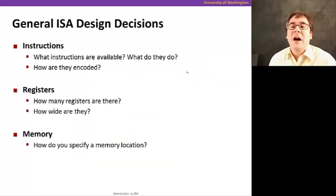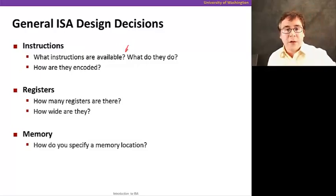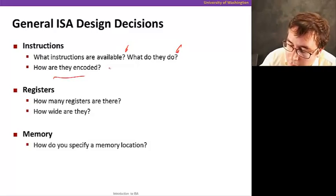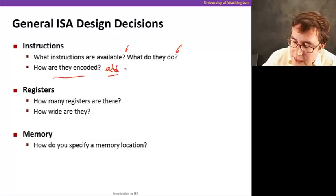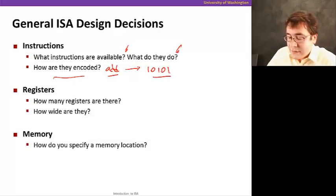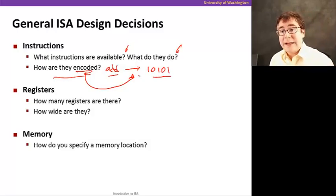So, here are the major decisions when designing an ISA. First of all, obviously, what instructions are available, like add, subtract, multiplication, floating point operations, and so on. And what do they do? Exactly how they change the system state, and also, how they are encoded. Because if you recall, when, say, you have an add instruction in assembly, it becomes some sequences of zeros and ones. That's what the computer actually understands. And the encoding is exactly this mapping between the instruction in the ISA and the actual bit sequence that determines that instruction, that encodes that instruction.